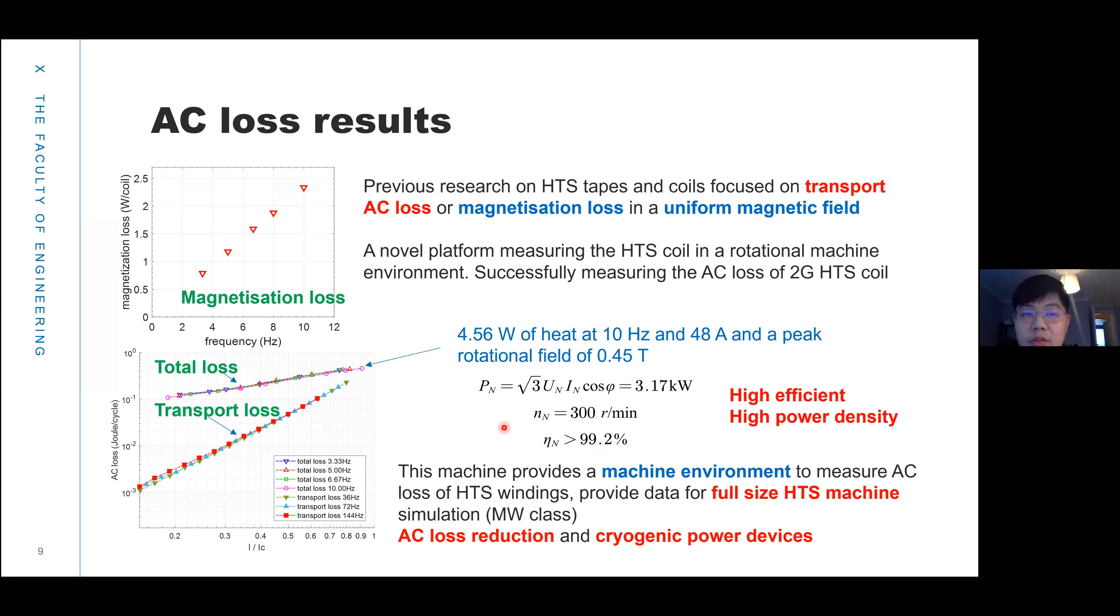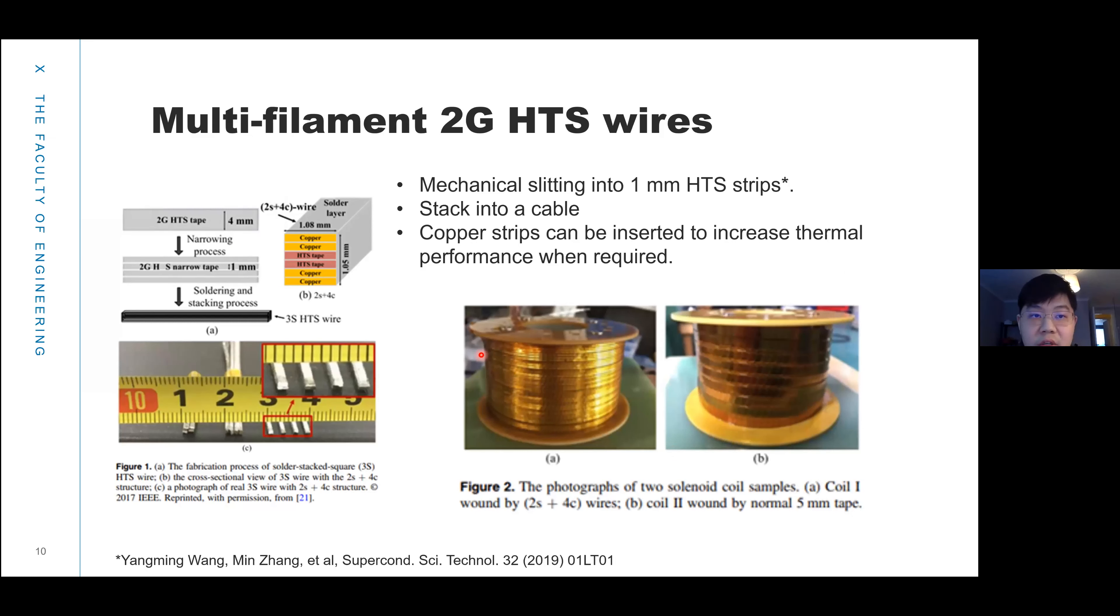We can apply different design or structure of the HTS coil in this measurement platform and measure the AC loss performance of different HTS coils to identify AC loss reduction or connect to cryogenic power devices to identify how the power electronics will influence the AC loss of the coil. First, we have proposed a multi-filament 2G wire.